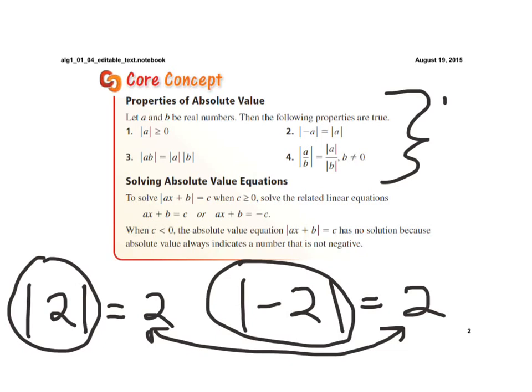Now, to help us solve equations, this is the rule that we'll use. If the absolute value of ax plus b is equal to c, c must be greater than or equal to 0, then we have two equations we have to solve. We have to solve ax plus b equals c, and ax plus b equals a negative c.